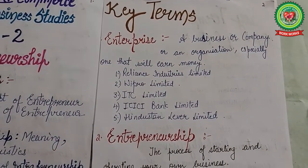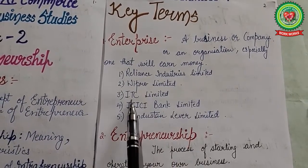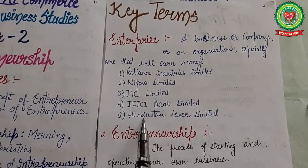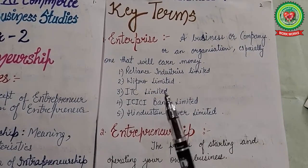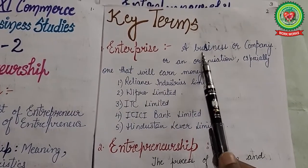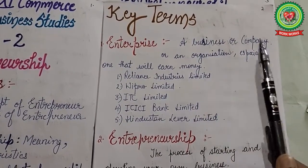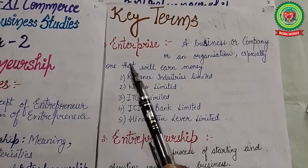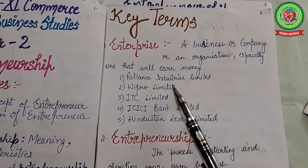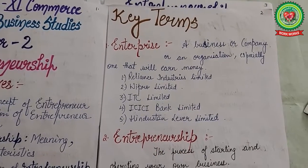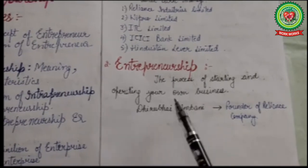The first key term is enterprise. For example, Reliance Industries Limited, Wipro, ITC, ICICI Bank, Hindustan Liver Limited — these are companies. Enterprise is a business, company, or organization, especially one that runs in a market to earn money.